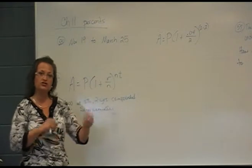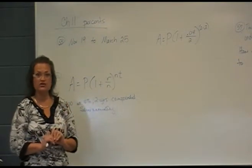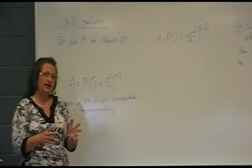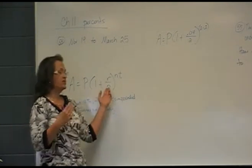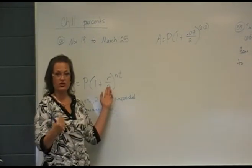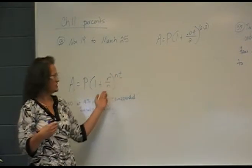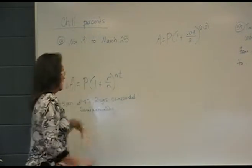If it's quarterly, they add your interest four times a year. Monthly would be 12. If it's just annually, that's just one time a year, and so on. N is how many times your interest is added on each year. Then we use that number again in the exponents, the same thing here, and then T is how many years time.